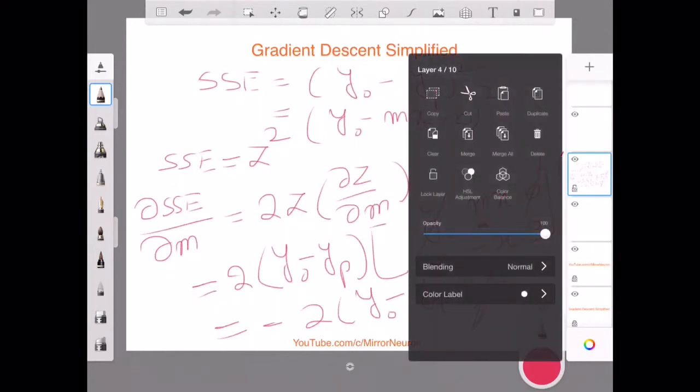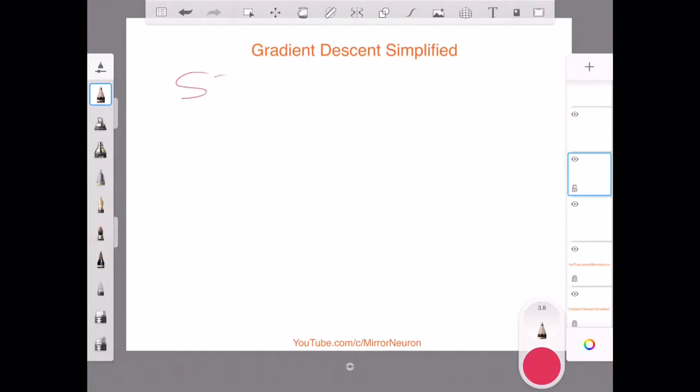Now let us see. SSE again is nothing but y original minus mx minus b, whole squared. This is the error function for us, and I am interested in knowing how much will my sum of squared error change if I change b.